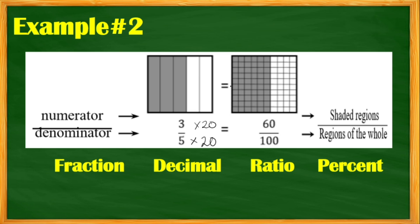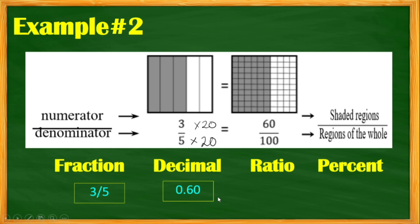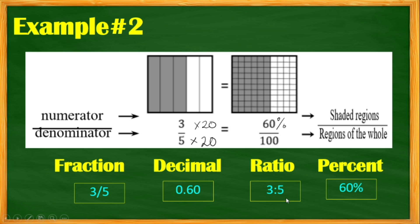60 is the shaded region and 100 is the whole region. The fraction part is 3 fifths. For decimal numbers, just move the decimal point two places to the left. The ratio is 3 is to 5. To get the percent, just write the percent sign to the numerator, so we have 60 percent. It's easy as that.